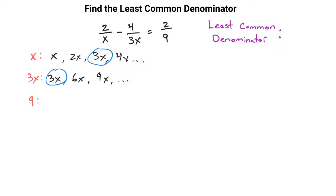So if we look at 9, well that's going to start with 9, and then 18, and 27 if you multiply by 3, so on and so forth.